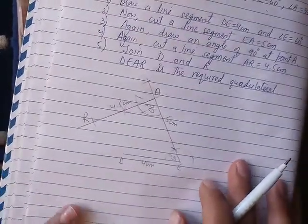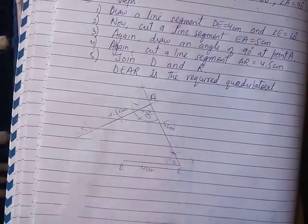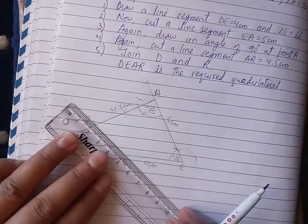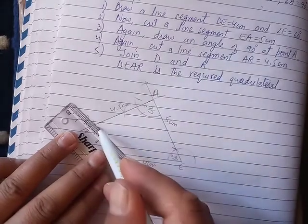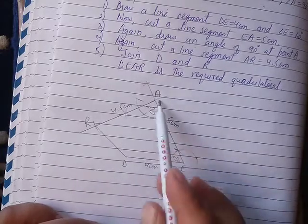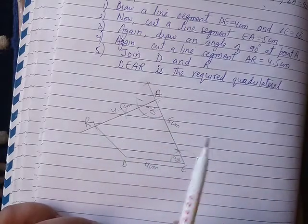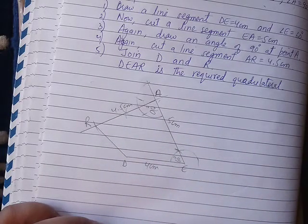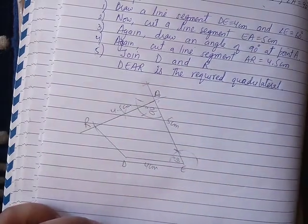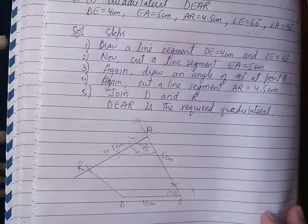Next, join D and R. DEAR is the required quadrilateral. This completes question number one.